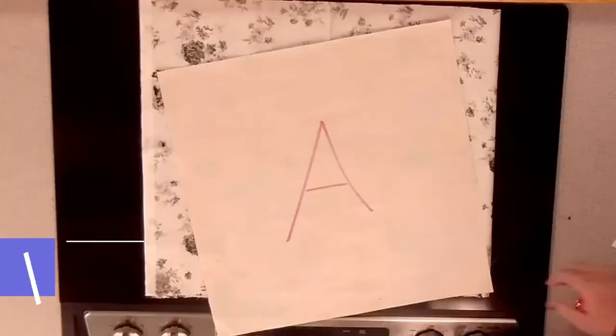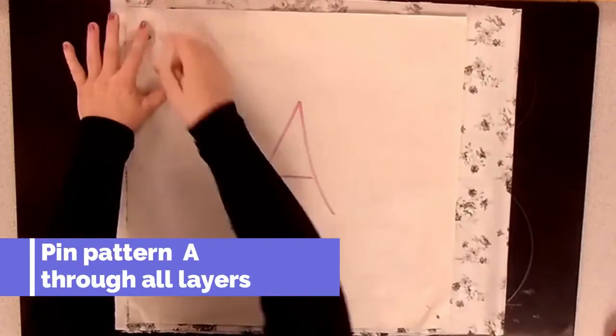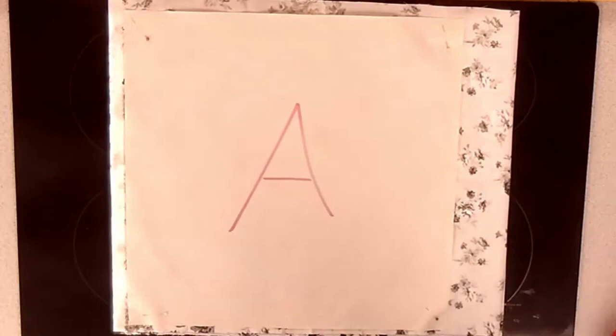Then get pattern piece A. Place it on top of your fabric as straight as you can and pin first the four corners and then two pins on each side.